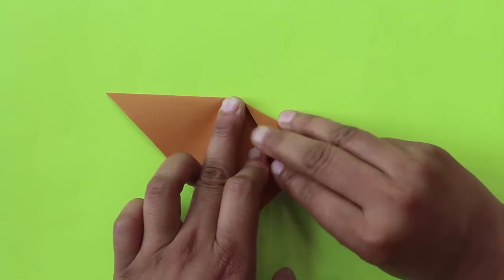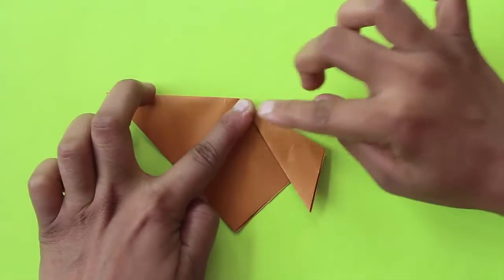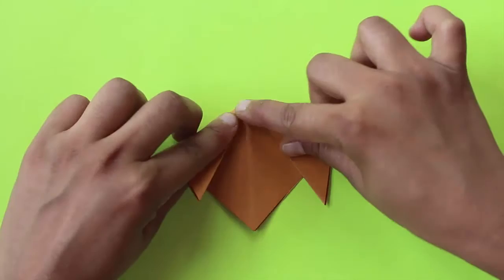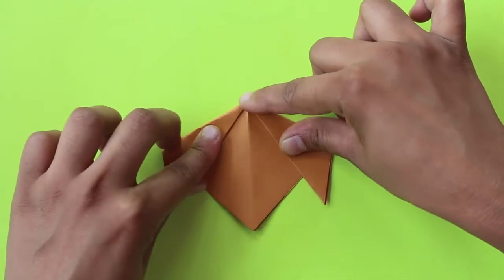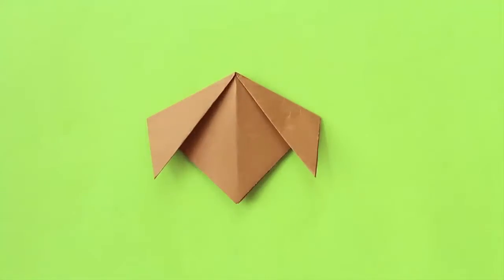Now from the diagonal, midpoint of the diagonal, fold two small triangles to make the ears of the cat.